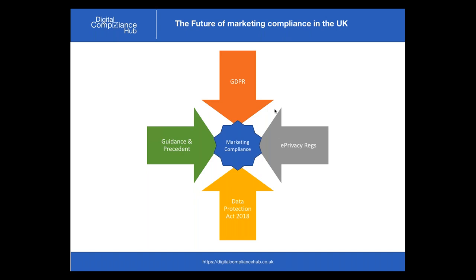Going back to the two arrows — data protection and privacy — what that means for the future of marketing compliance is that we need to think about the General Data Protection Regulation and consent rules, the privacy regulations and their UK implementation, the Data Protection Bill which will become a Data Protection Act probably in 2018, guidance from the ICO and Article 29, and any precedents set — including potentially from European regulators while we're still part of Europe. That's a summary of the key factors influencing marketing compliance under GDPR.